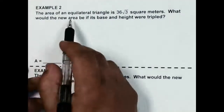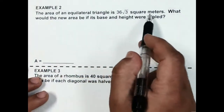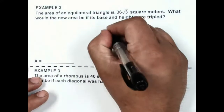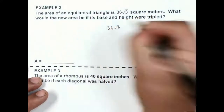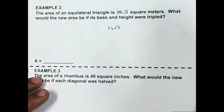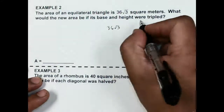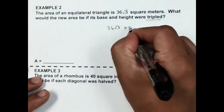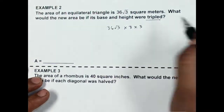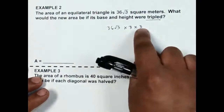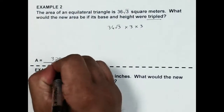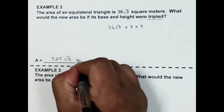Let's look at an example. The area of an equilateral triangle is 36 square root of 3 square meters. What would the new area be if its base and height were tripled? I don't need to know the actual measurements of the base and height, because I'm changing both of them by a factor of 3. I can take my original area of 36 square root of 3 and multiply by 3 times 3, or by 9, and that gives me 324 square root of 3 meters squared.